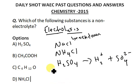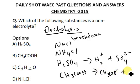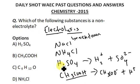We also have CH3COOH, which is ethanoic acid. When it breaks down, we get CH3COO− and H+. Now this is a very weak electrolyte — it is an electrolyte, but it's very weak. H2SO4 is a very strong electrolyte, while ethanoic acid is a very weak electrolyte, but regardless, it is still an electrolyte.